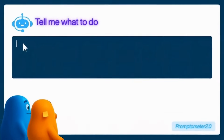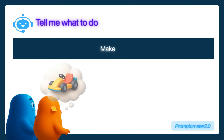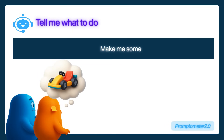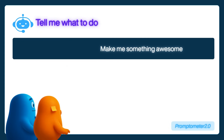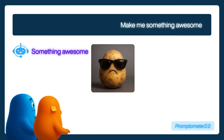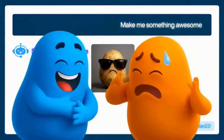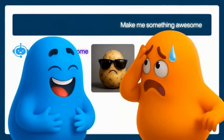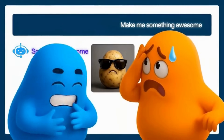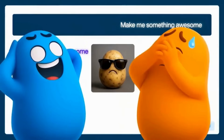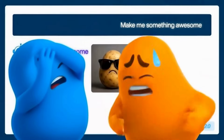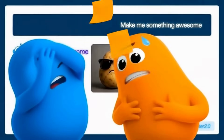So first, what is a prompt? A prompt is simply how you talk to an AI. It's the message you type to tell it what you want it to do — kind of like giving instructions to a really fast assistant. The words you choose are everything. If you're too vague, the AI will guess. But if you're clear, it'll nail exactly what you meant.